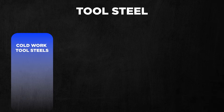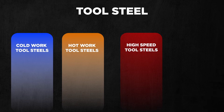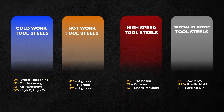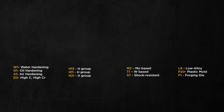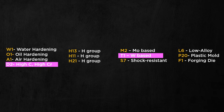Tool steels are classified based on their intended application and working temperature. The major categories are cold work tool steels, hot work tool steels, high speed tool steels, and special purpose tool steels. They are further classified based on how they harden and their chemical composition — water hardening, oil hardening, air hardening — as well as chromium-based, tungsten-based, and molybdenum-based tool steels.